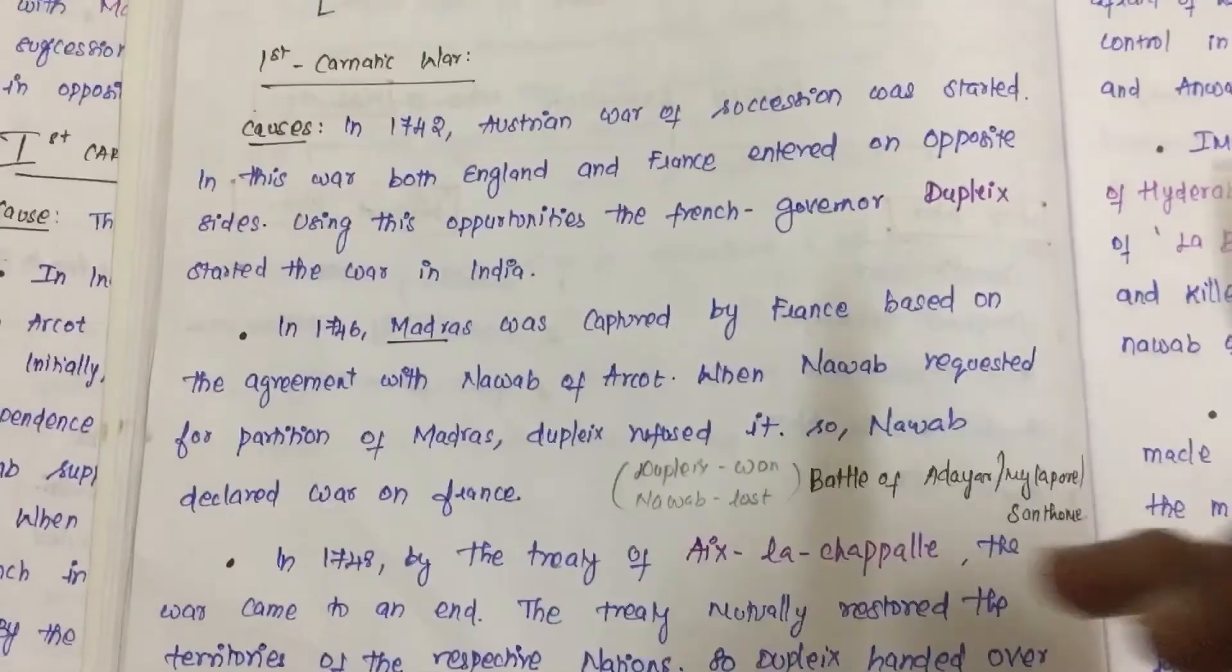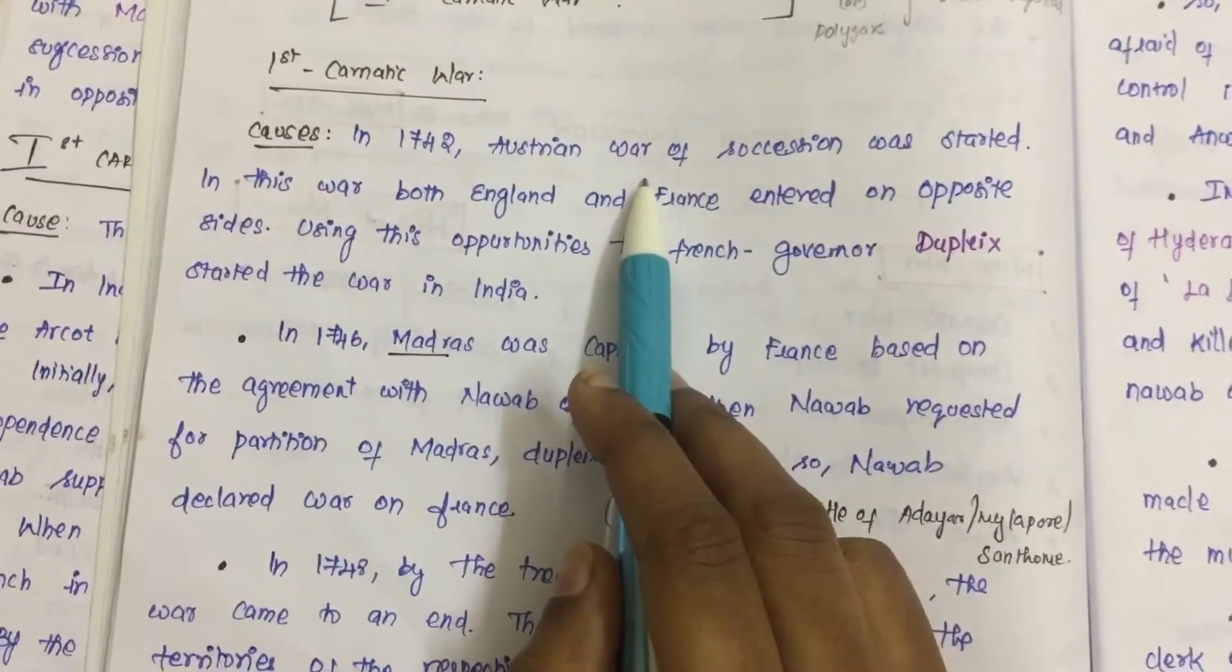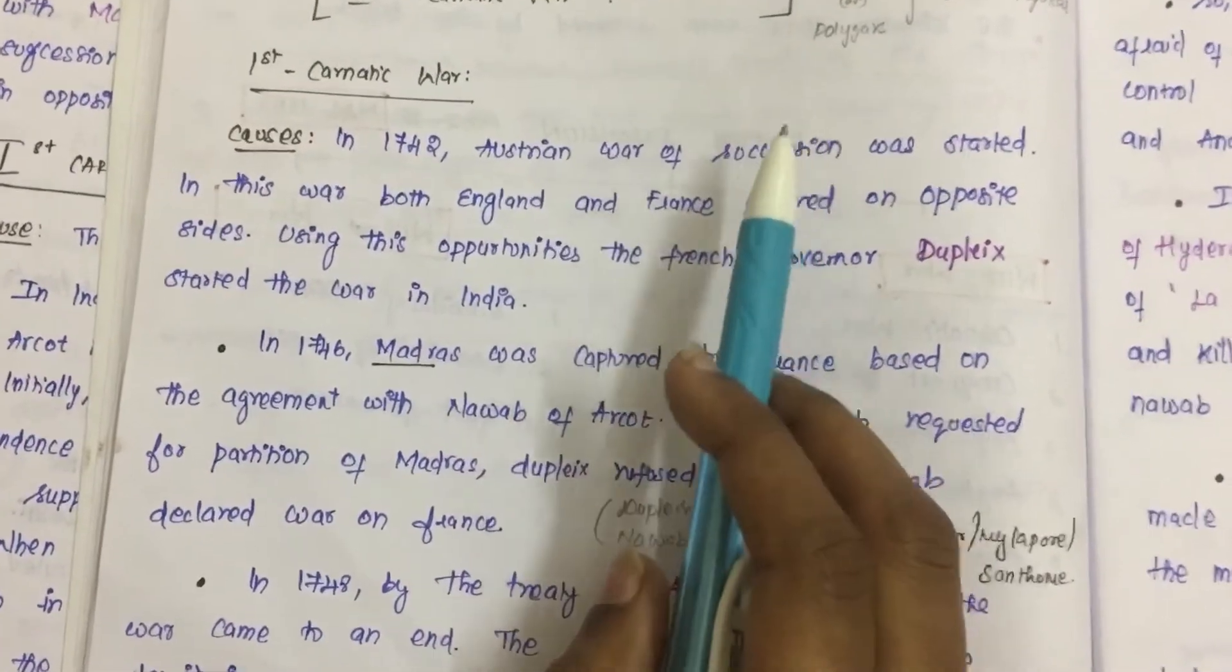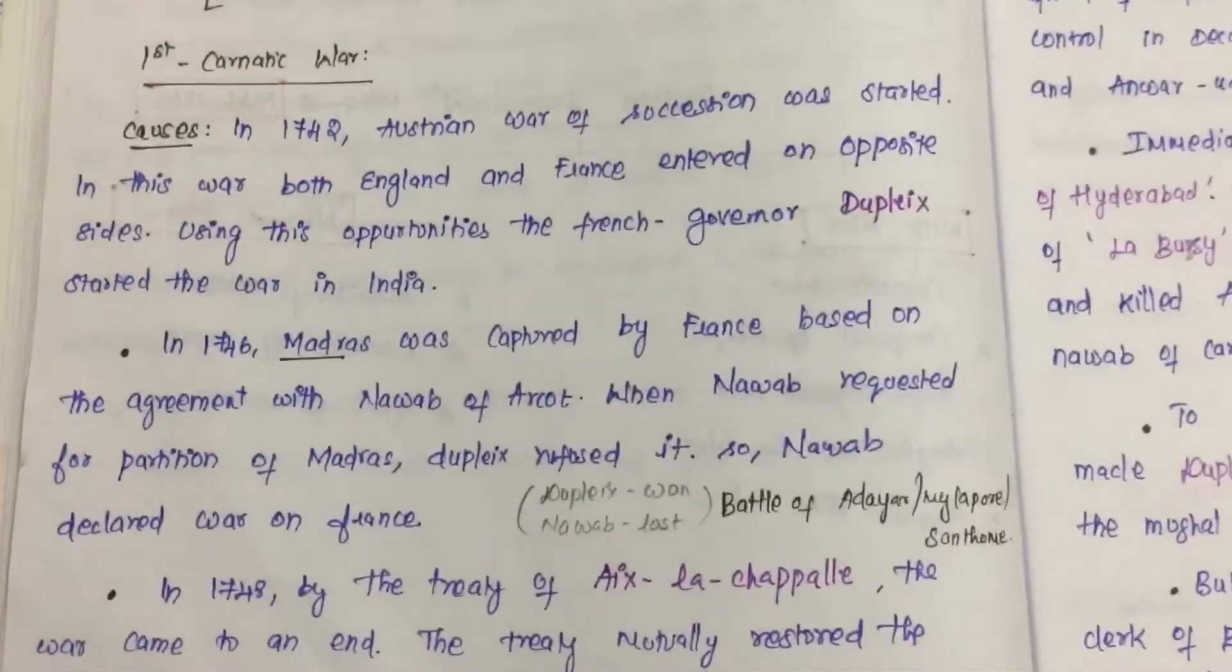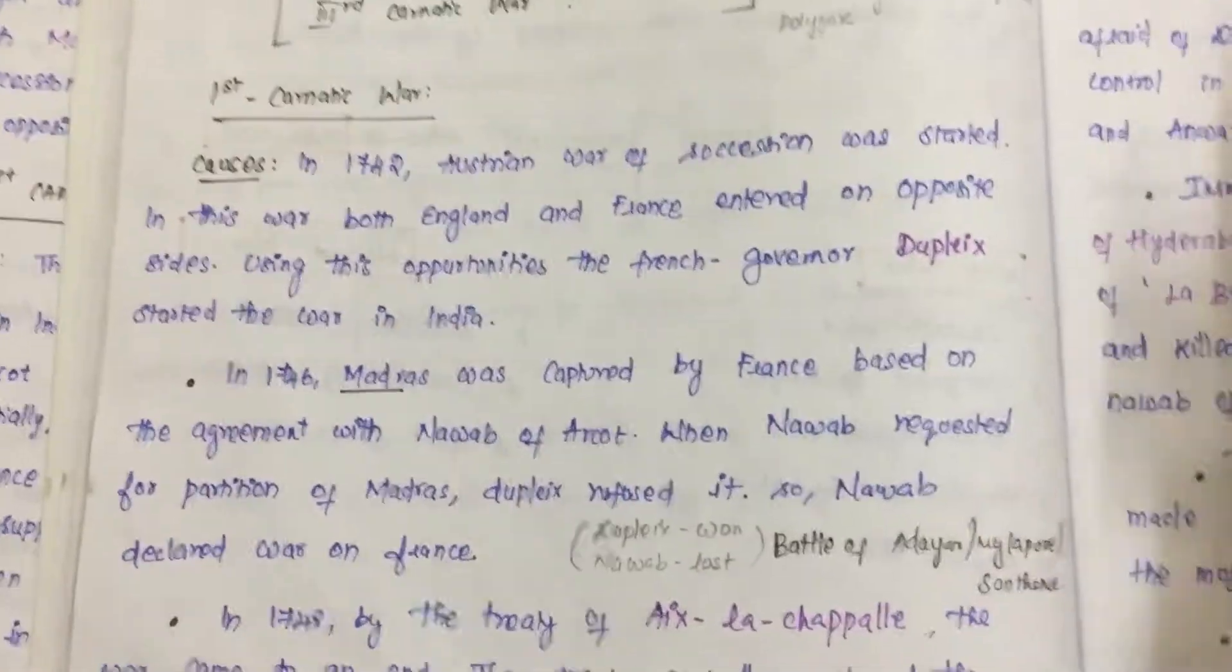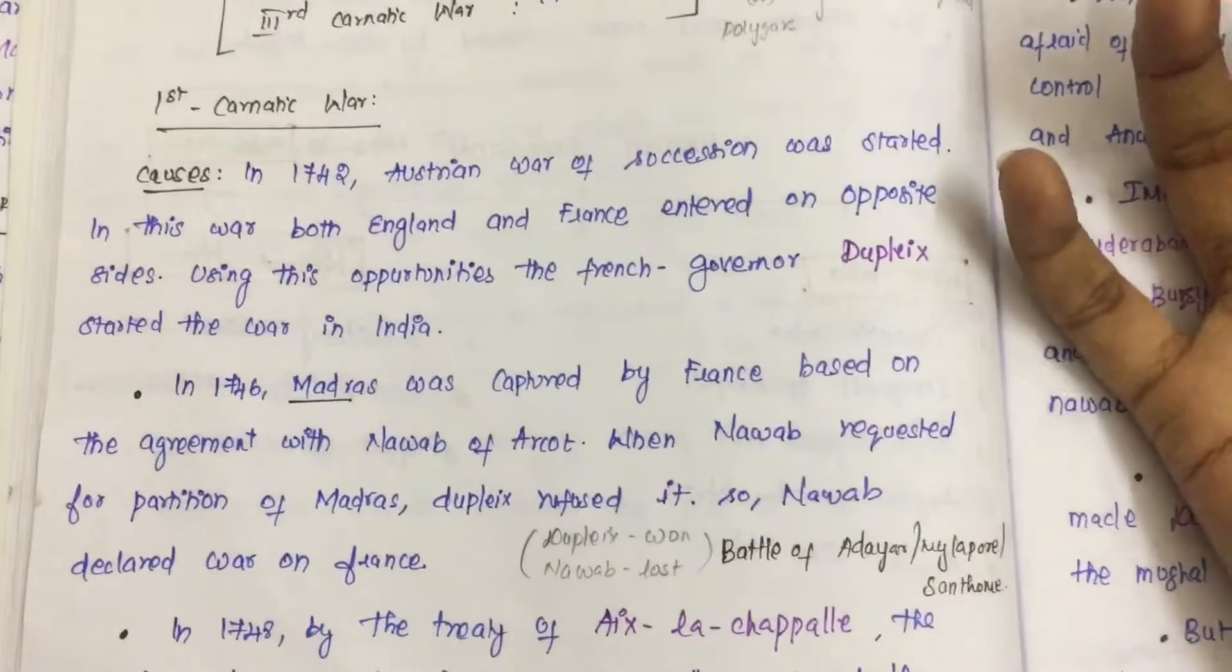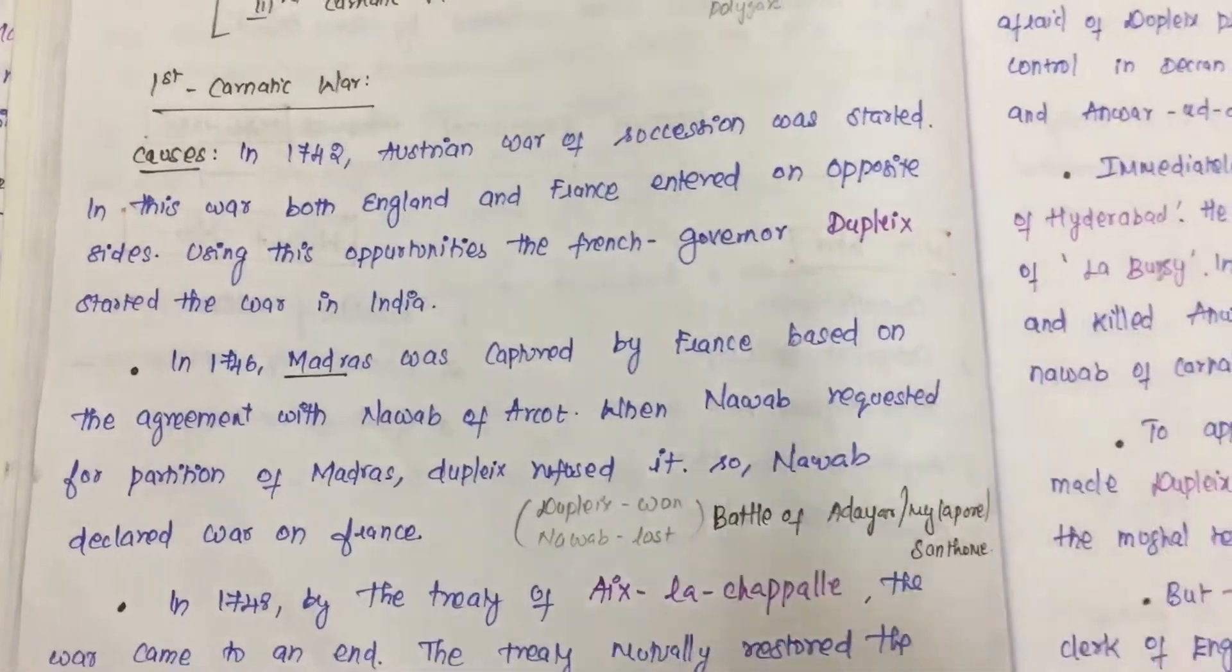In 1742, the War of Austrian Succession was a war between England and France. What is the case? The war involved Dupleix in India.